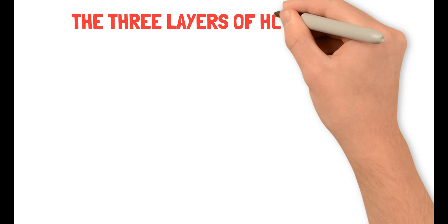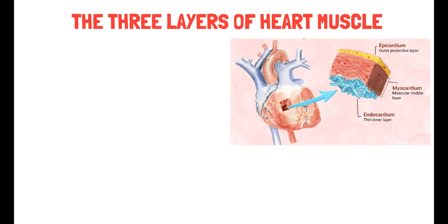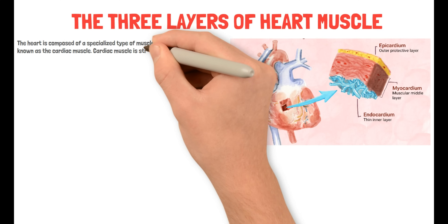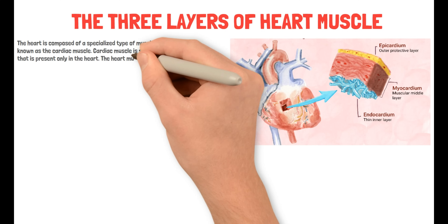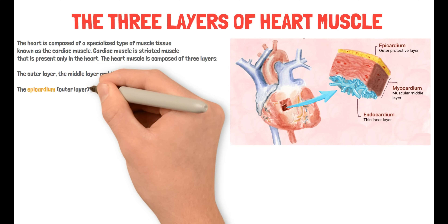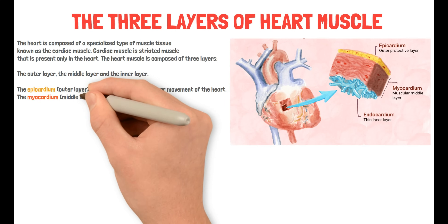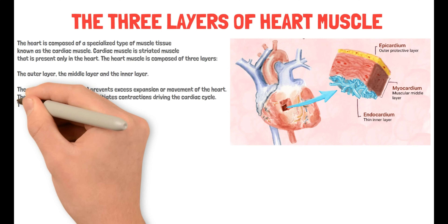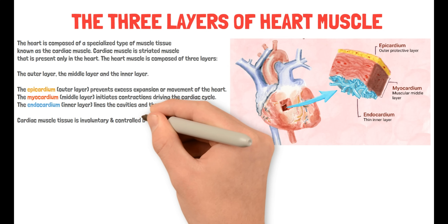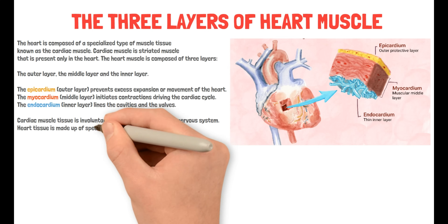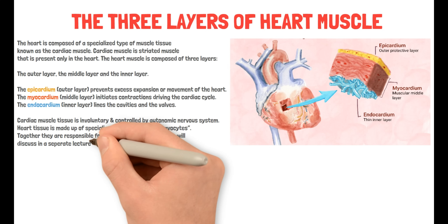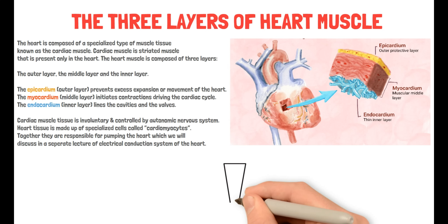After discussing the basic anatomy of the heart, let's talk about what the cardiac muscle is made of. What are the three layers of the heart muscle? The heart is composed of a specialized type of muscle tissue known as cardiac muscle — a striated muscle present only in the heart. The heart muscle is composed of three layers: the outer layer, the middle layer, and the inner layer. The epicardium outer layer prevents excess expansion or movement of the heart. The myocardium middle layer initiates contractions driving the cardiac cycle, and the endocardium inner layer lines the cavities and the valves. Cardiac muscle tissue is involuntary and controlled by the autonomic nervous system. Heart tissue is made up of specialized cells called cardiomyocytes, which are responsible for pumping the heart — a topic we will discuss in a separate lecture on the electrical conduction system of the heart.